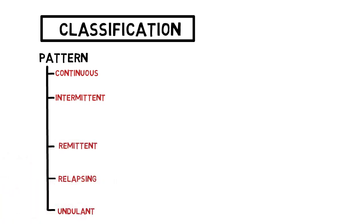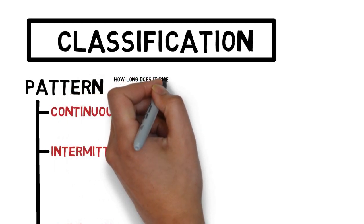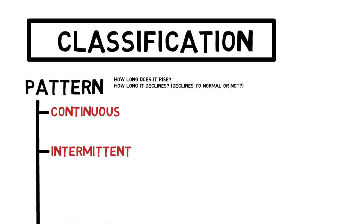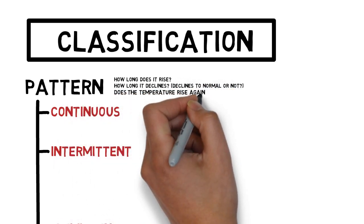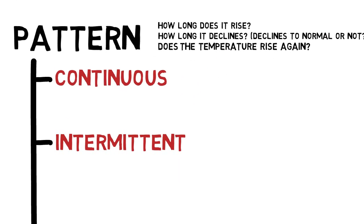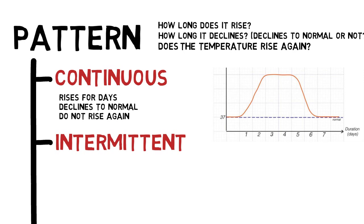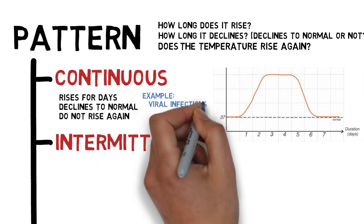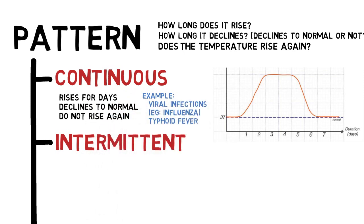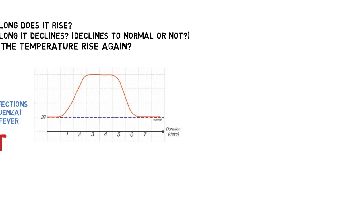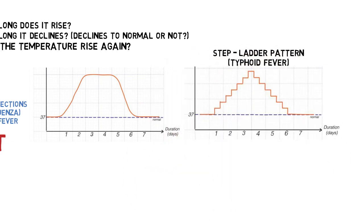These five patterns can be differentiated by asking four simple questions: for how long the fever spikes, for how long it declines, whether it declines to normal body temperature, and whether the fever recurs. For continuous or persistent fever, the temperature rises for a number of days before declining back to normal and remaining there. This is commonly seen in self-limiting viral illnesses such as influenza or common cold, and typhoid fever caused by some species of salmonella.